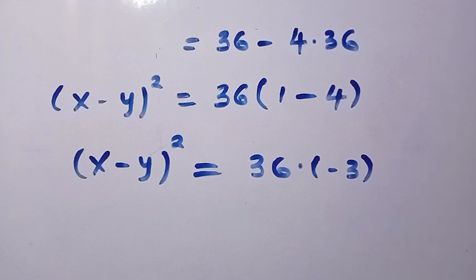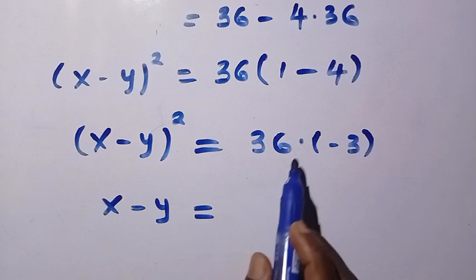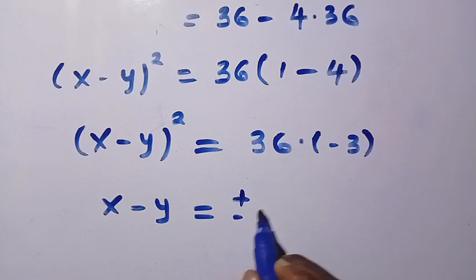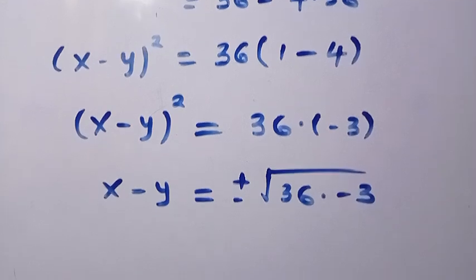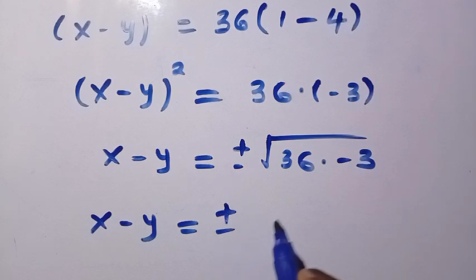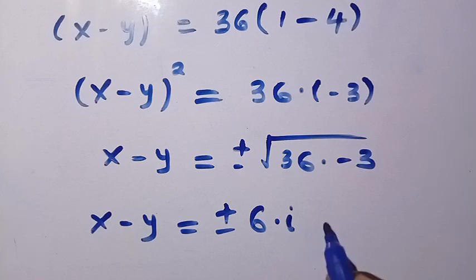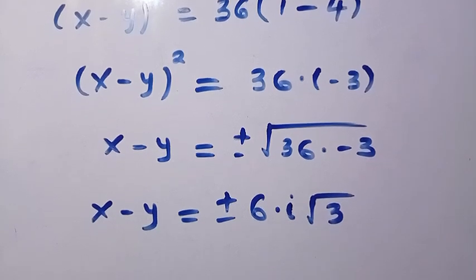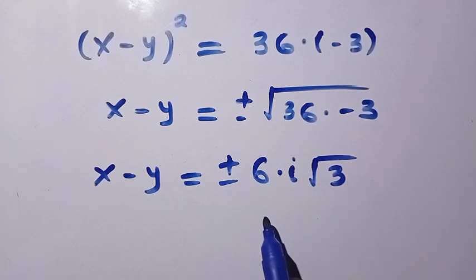Taking the square root of both sides, we get x minus y equals plus or minus the square root of 36 times negative 3. We separate this as plus or minus the square root of 36 — which is 6 — times the square root of negative 1, which is i, times the square root of 3. So x minus y equals plus or minus 6i√3.